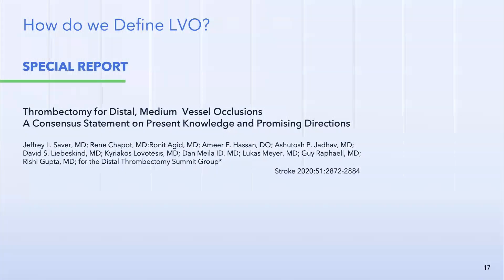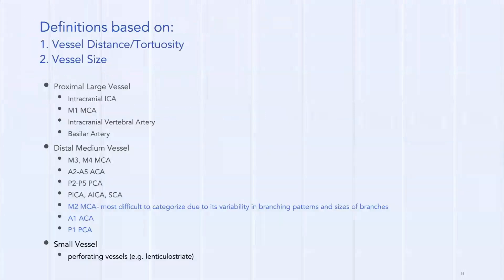Now let's define a large vessel occlusion, because in the literature it's not always consistent. A working group on thrombectomy for distal medium vessel occlusions defined LVO by vessel distance, tortuosity, and vessel size. Without argument, a clear large vessel is the intracranial ICA, M1 MCA, intracranial vertebral arteries, and basilar artery.